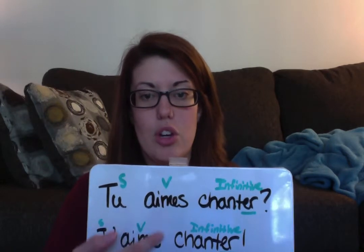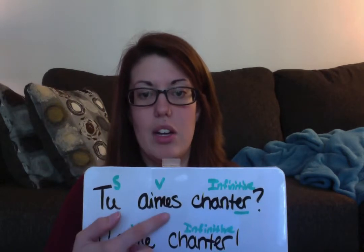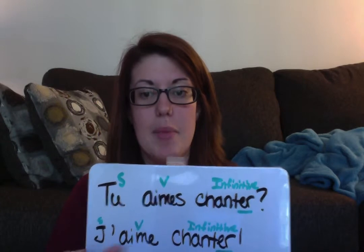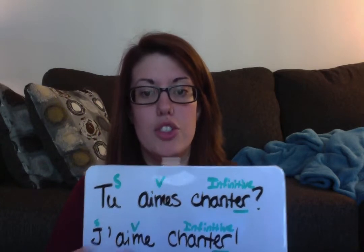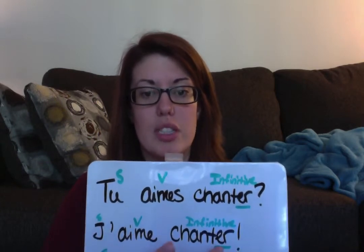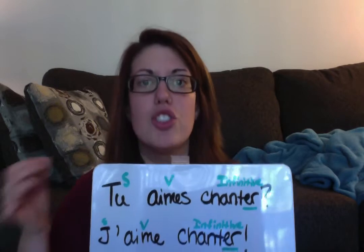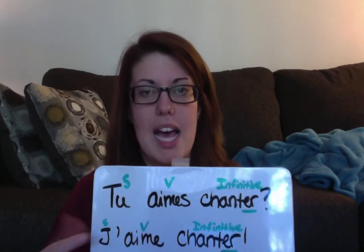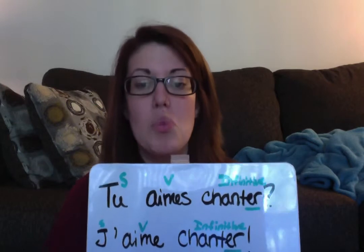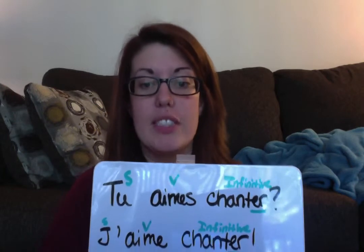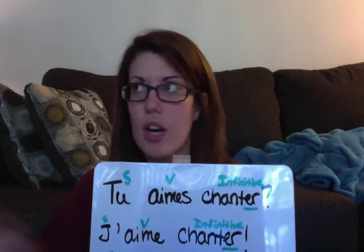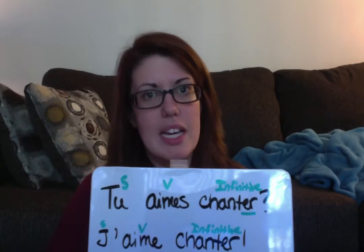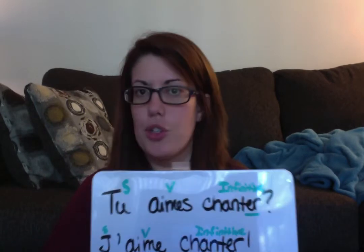That's because this is aime conjugated for je — j'aime chanter. So to say you like something, you say j'aime, which means 'I like.' You can follow that with j'aime chanter, 'I like to sing,' or any other action, or you can say j'aime le poster, 'I like the poster.'